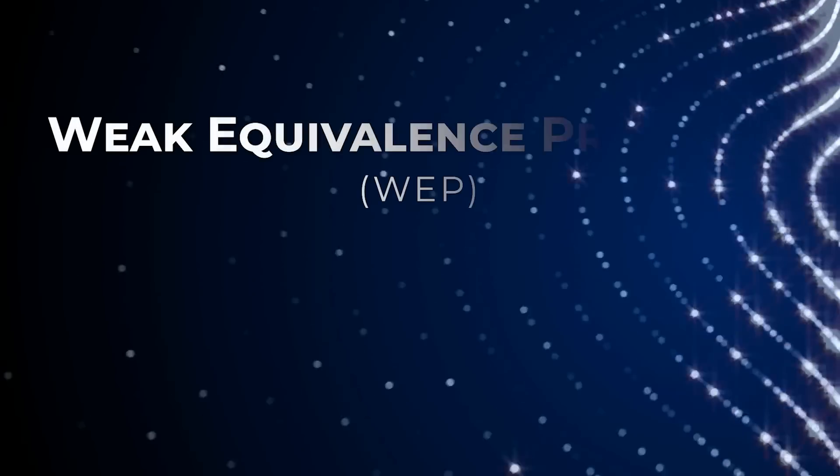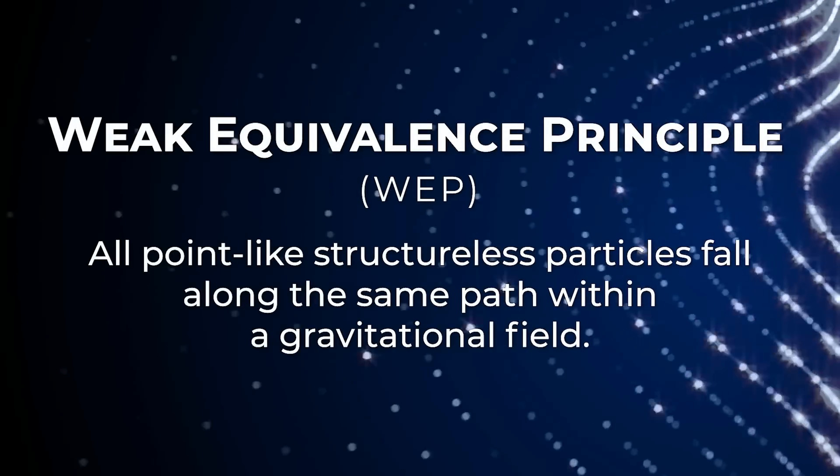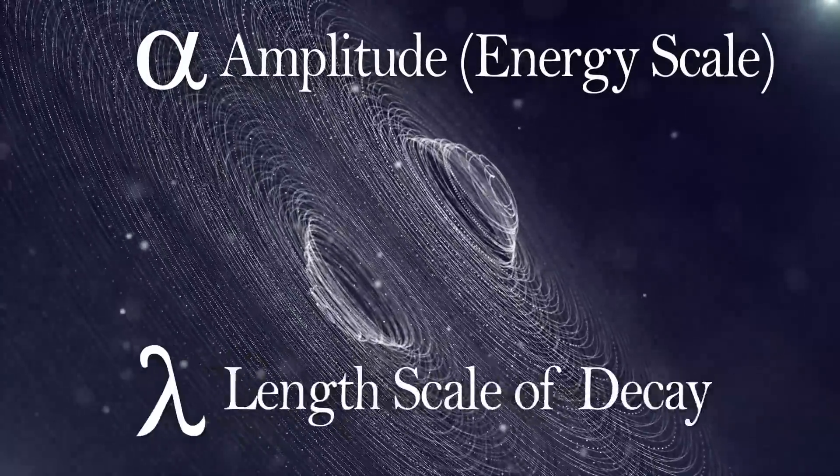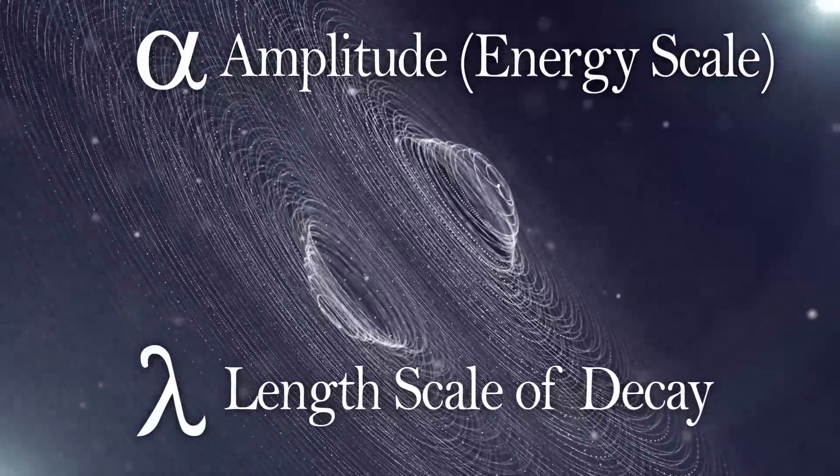This allows you to look for deviations in what's called the weak equivalence principle or in the inverse square law. And again, this can be parameterized by these two parameters, alpha and lambda.